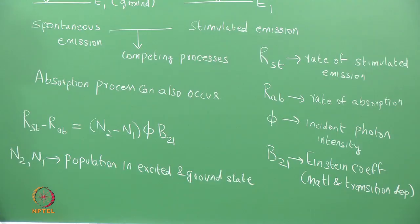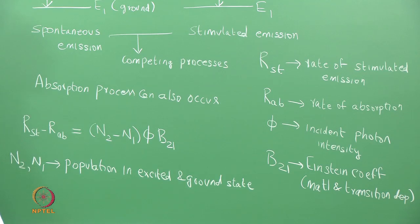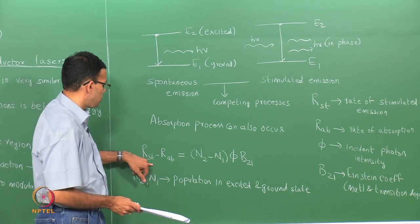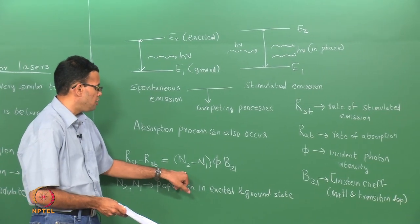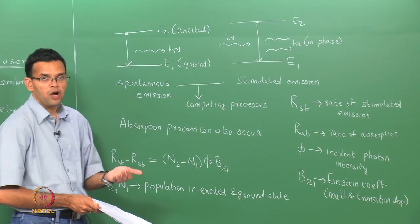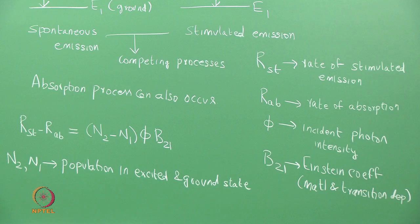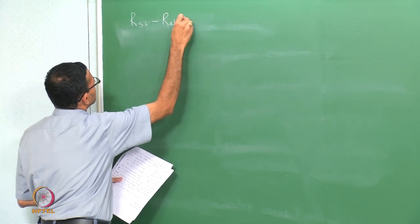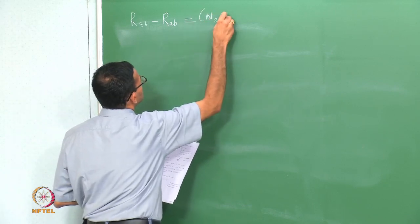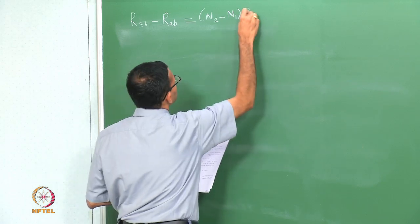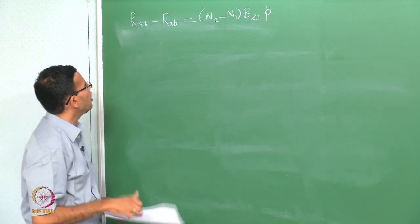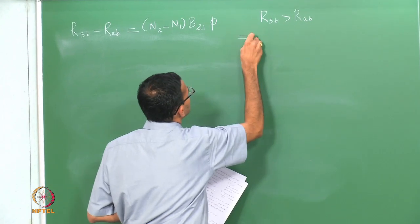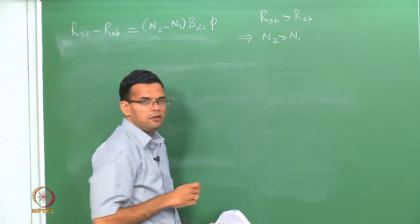In this formula we have ignored spontaneous emission, assuming its rate is much smaller than stimulated emission, so the only competition is between emission and absorption. In order for R_st to be greater than R_ab, we essentially want n2 to be greater than n1. This is the reason why you want population inversion in the case of a laser — we need to create a population inversion in the system before laser action occurs.